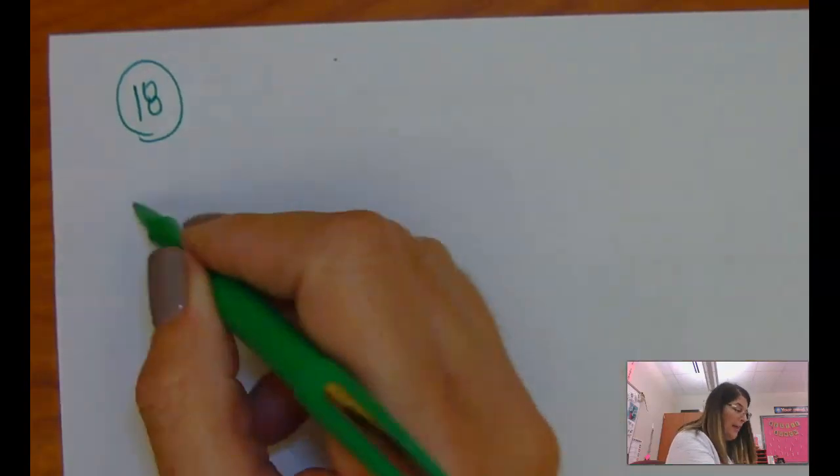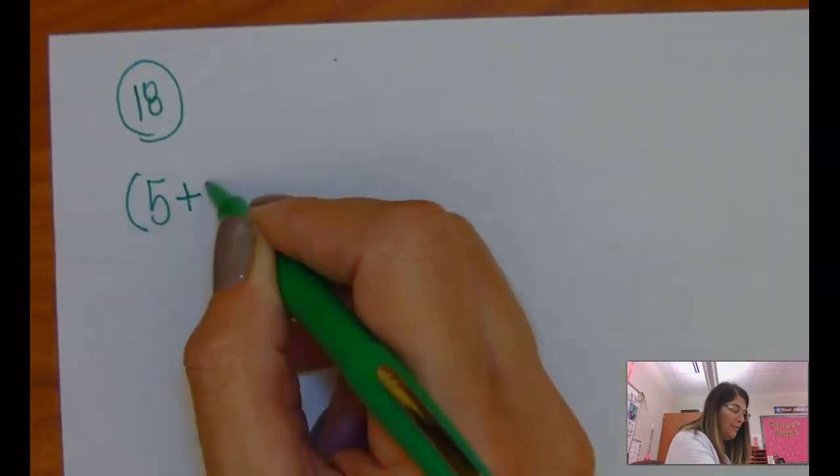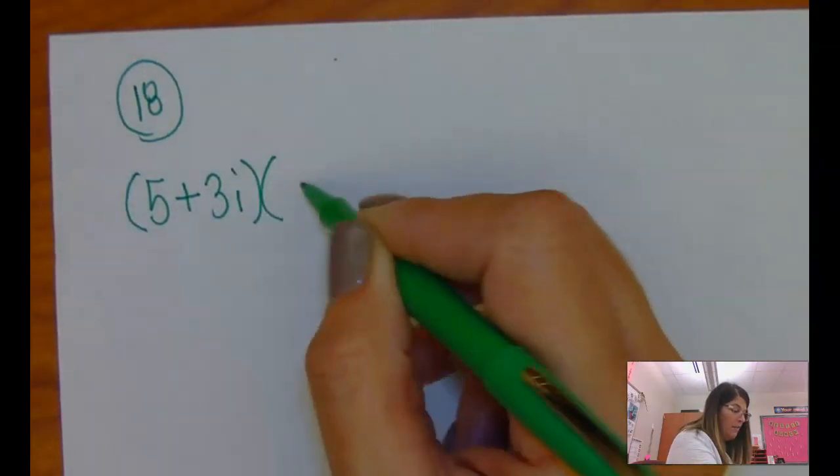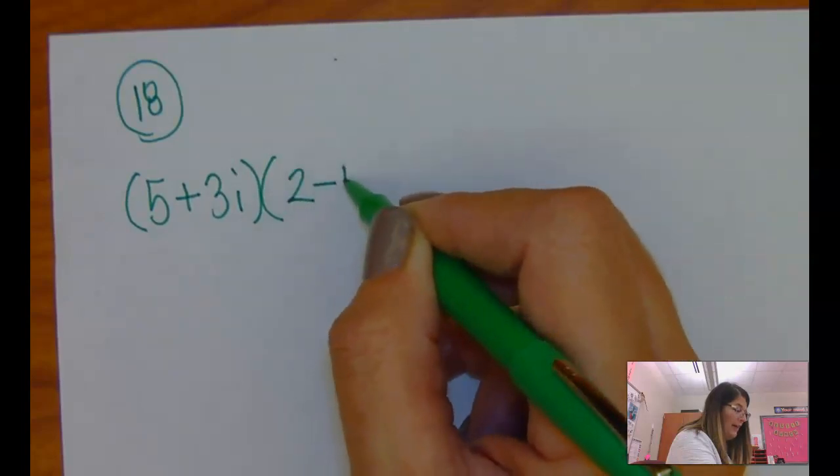Okay, if you're struggling with homework problem number 18, basically you are asked to multiply out three sets of binomials. Maybe it might look like this.